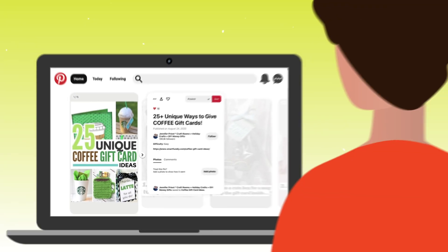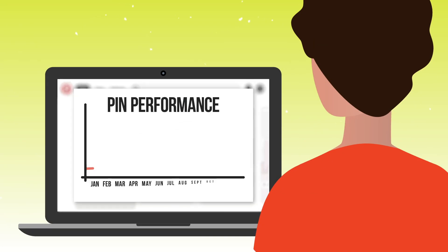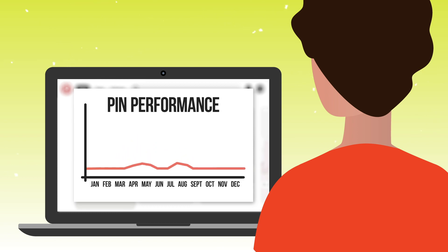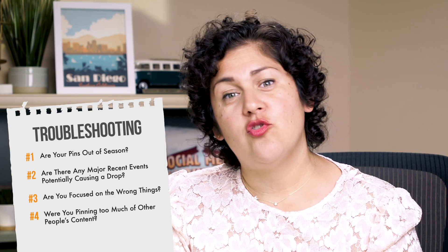There might also be something in current events that could explain a drop. For example, I have a post about gift cards and money gifts that performs great in the spring and summer because of wedding season. But due to current events in 2020, that pin tanked — it wasn't an optimization problem, it just had to do with what was happening at the time. As you look through your top pins and top boards, ask yourself: was I focusing on the wrong thing? Maybe you were pinning too much of other people's content. If one of their pins went viral and then dropped off, that could account for your huge drop in impressions.